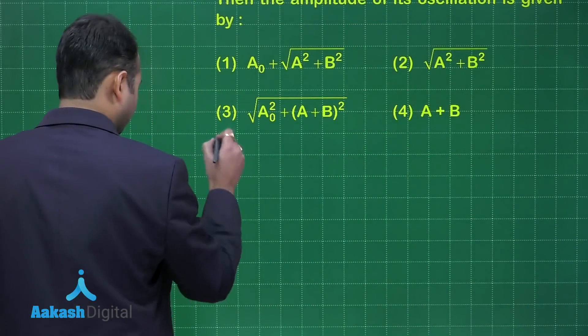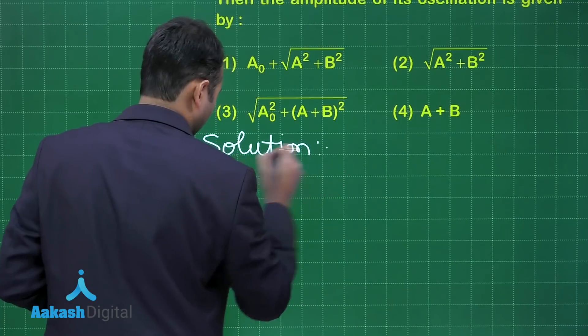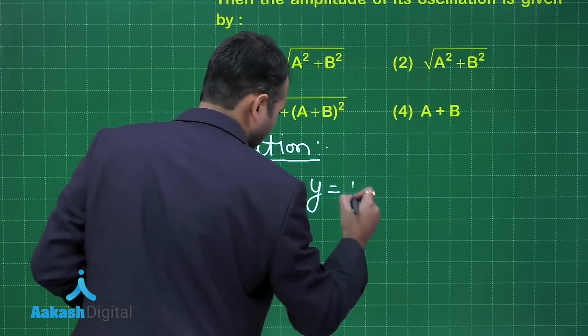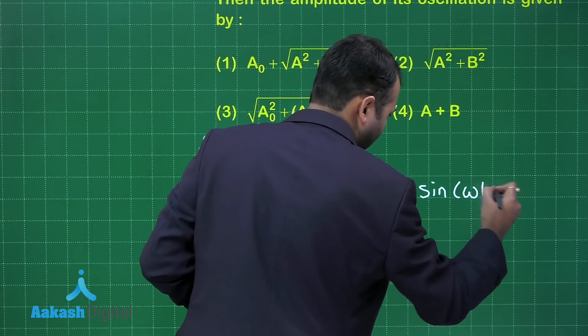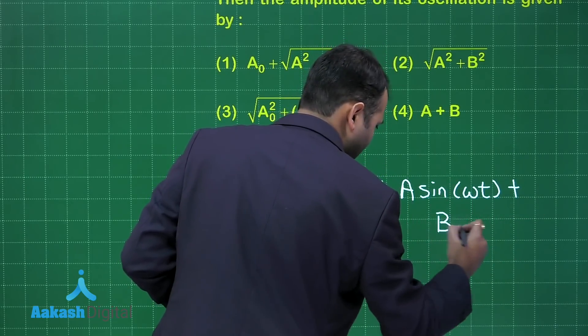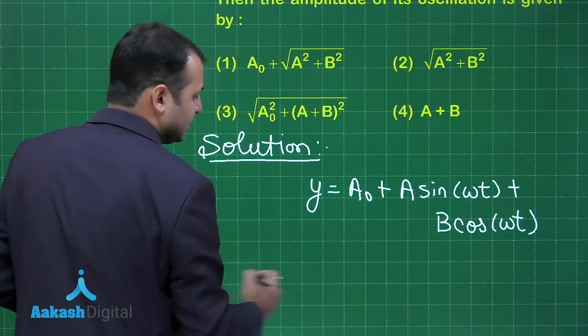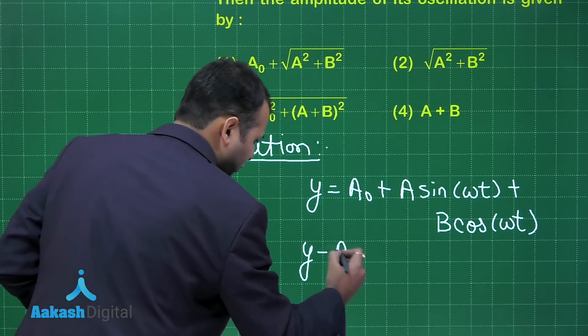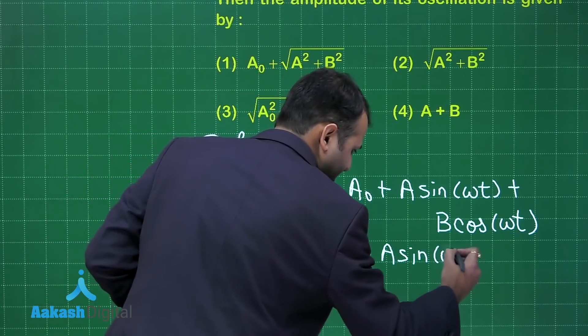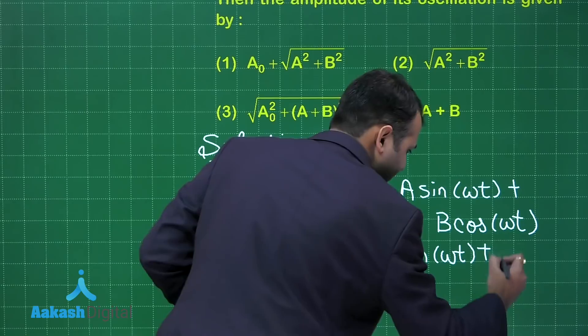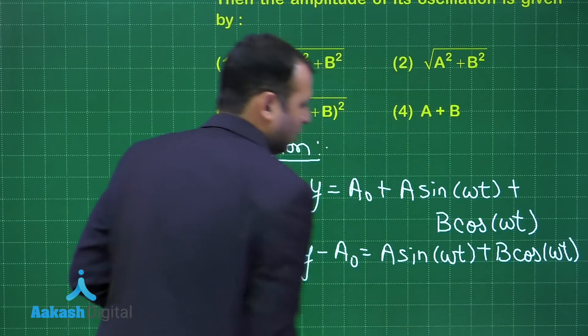y equals A₀ plus A sin(ωt) plus B cos(ωt). Here, since this is the initial position, the equation of the wave will be properly represented as this. Now the two components, these are two components, they are perpendicular to each other.